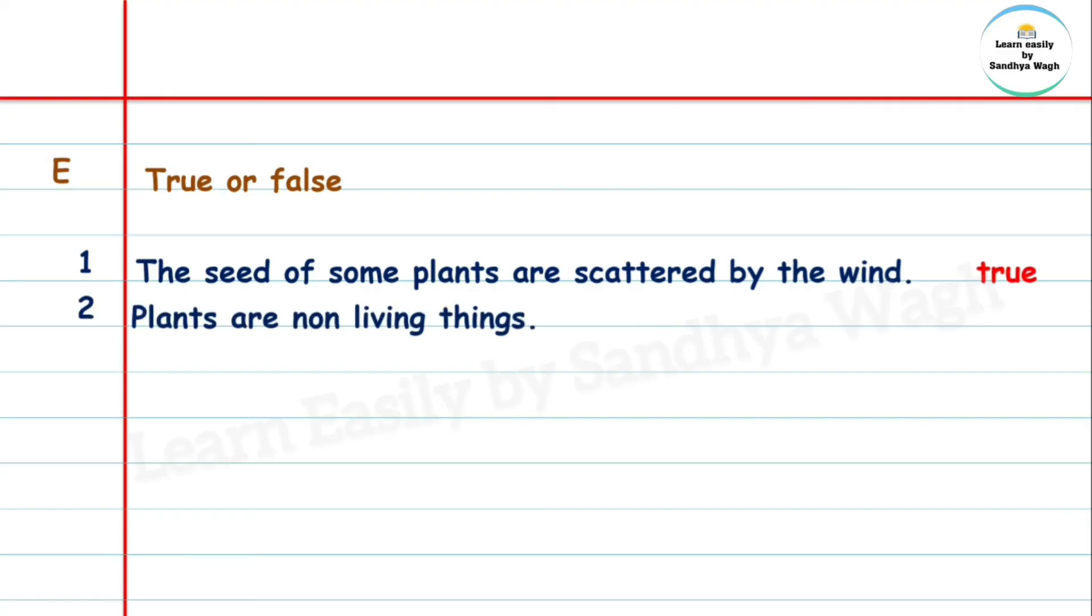Question 2: Plants are non-living things. Is this sentence correct? No, false. Plants are living things.